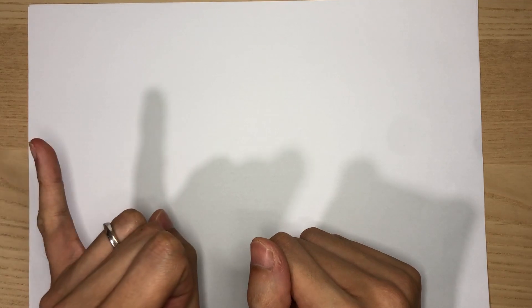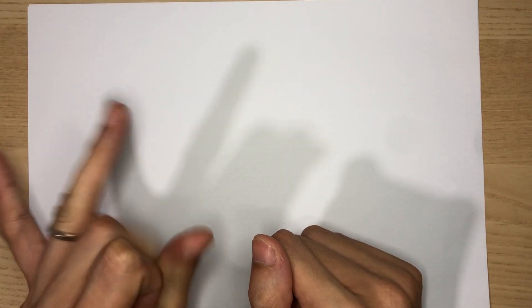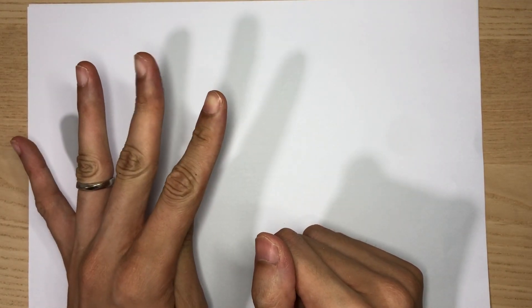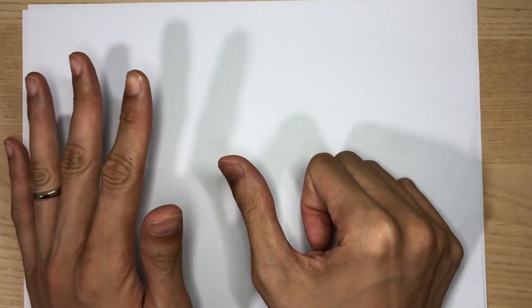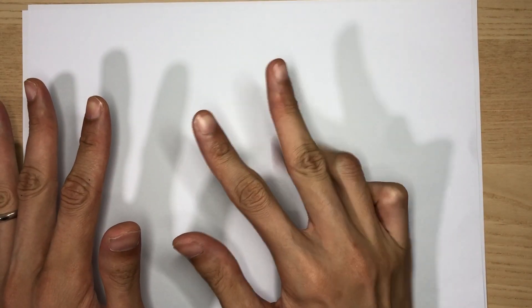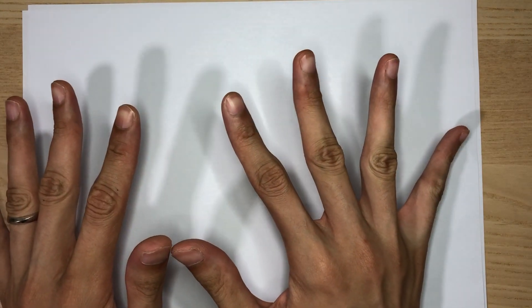So starting from your pinky, you will start with 5, 5, 10, 15, 20, 25, 30, 35, 40, 45, 50.